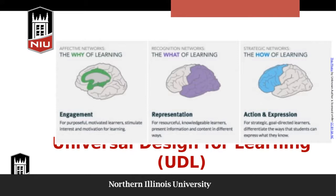One thing I want to point out about Blackboard Collaborate is that when you upload a file to share, it turns that file into an image file. When you upload a PowerPoint presentation, it turns each slide into an image of that slide, and sometimes things get a bit messed up. My picture here is covering up the title of the slide, which is 'Universal Design for Learning.' The first thing we'll talk about is what is UDL, and then segue into what that means for an accessible syllabus.